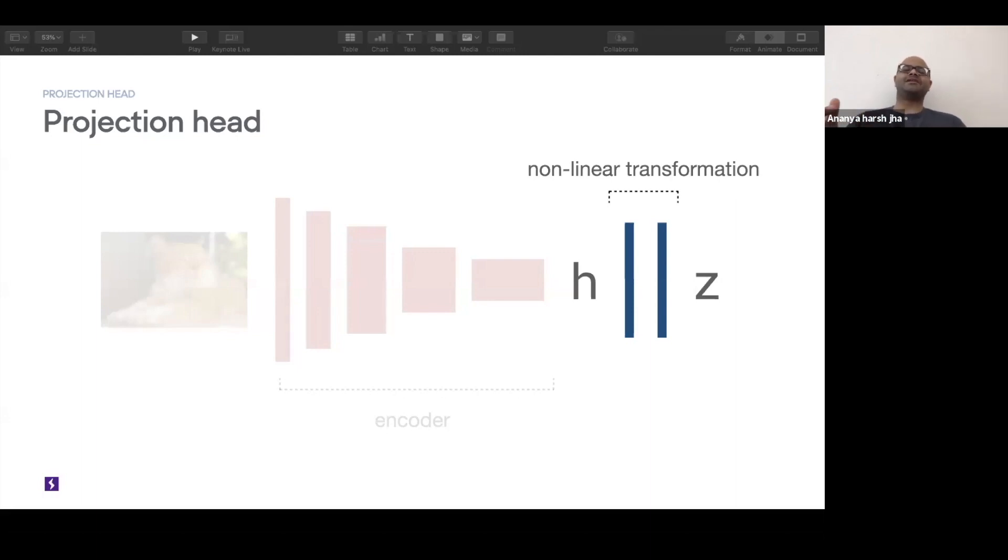Having a nonlinear transformation between h and z basically allows an expressive set of representations in h to be mapped to an invariant set of representations in z. So that's why nonlinear transformation is so important in this framework.